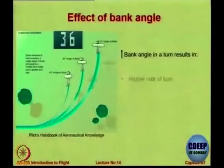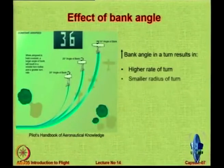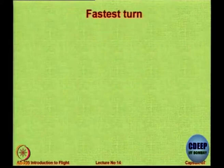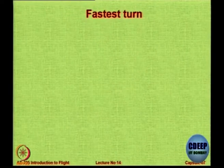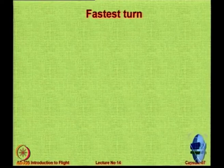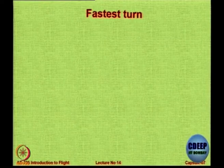Let us see the effect of bank angle. The same aircraft banking at a higher angle will have a smaller radius. If you are banking at a smaller angle, you will have a larger radius. That is why in the video shown, the aircraft in a very tight turn was at almost a 90-degree bank. Increasing the bank angle results in higher turn rate and smaller radius of turn, but it also causes higher loading on the wings and the stall speed also increases — it is dangerous because you will be stalling at a higher speed.